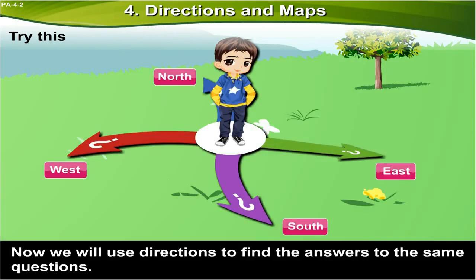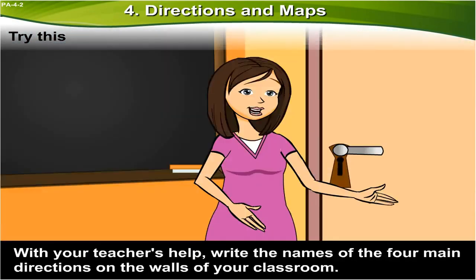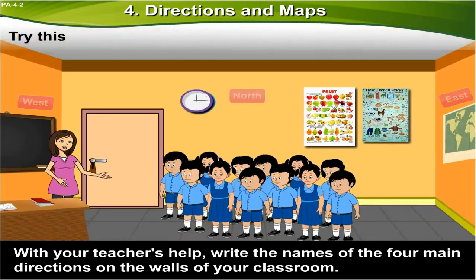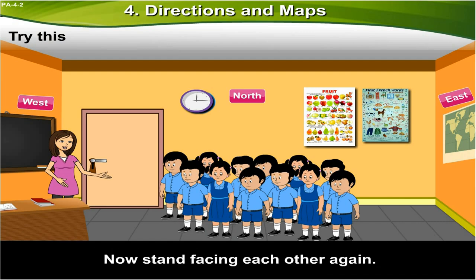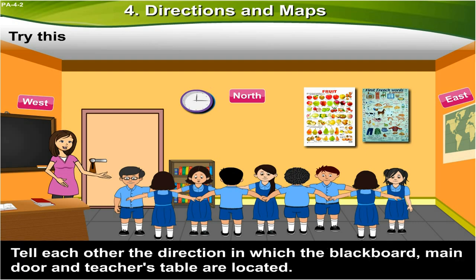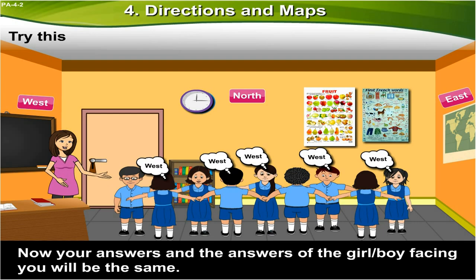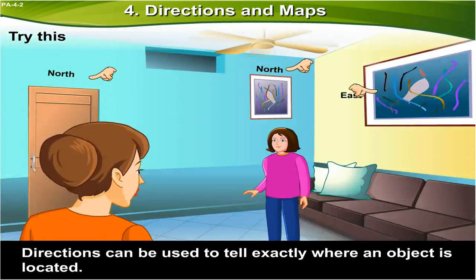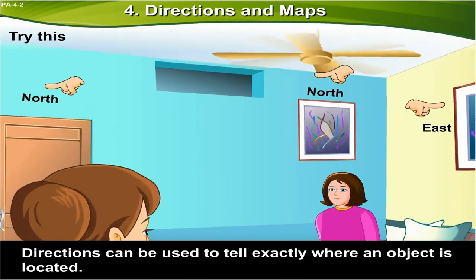Now, we will use directions to find the answers to the same questions. With your teacher's help, write the names of the four main directions on the walls of your classroom. Now, stand facing each other again. Tell each other the direction in which the blackboard, main door, and teacher's table are located. Now your answers and the answers of the girl or boy facing you will be the same. Directions can be used to tell exactly where an object is located.